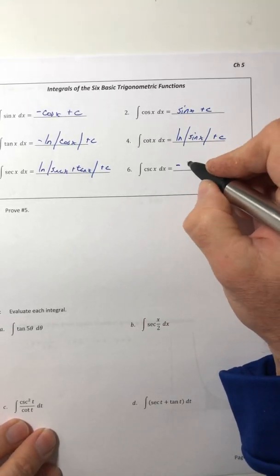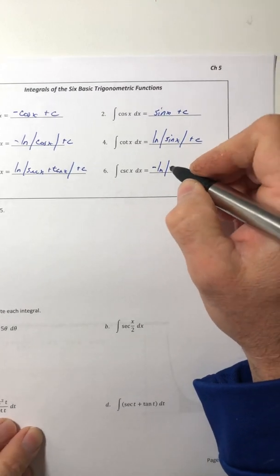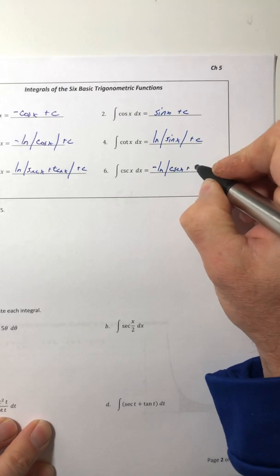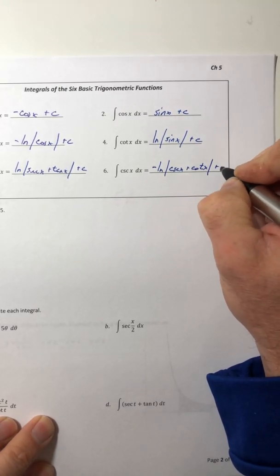And the integral of cosecant is negative ln absolute value of cosecant x plus cotangent x plus c.